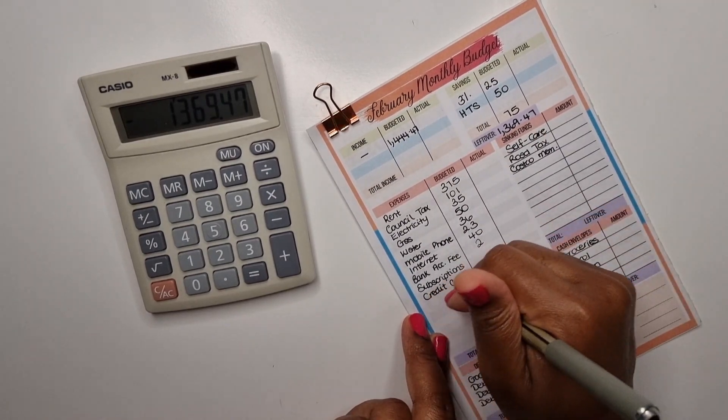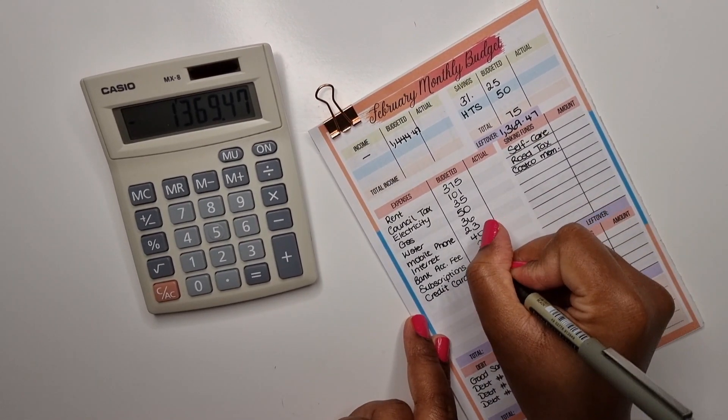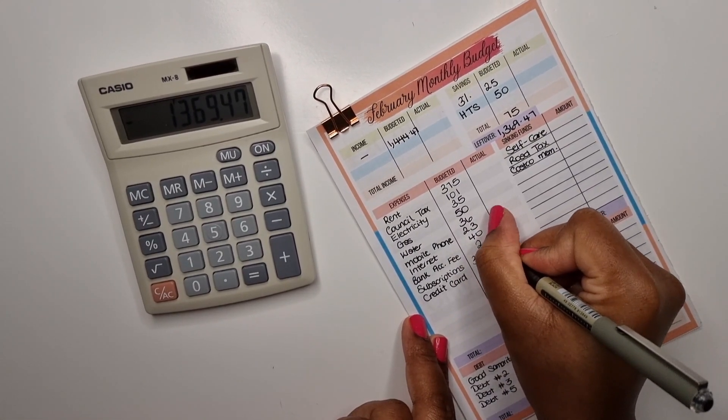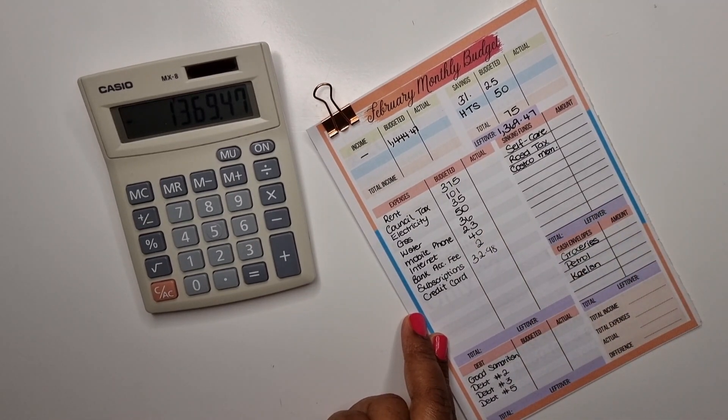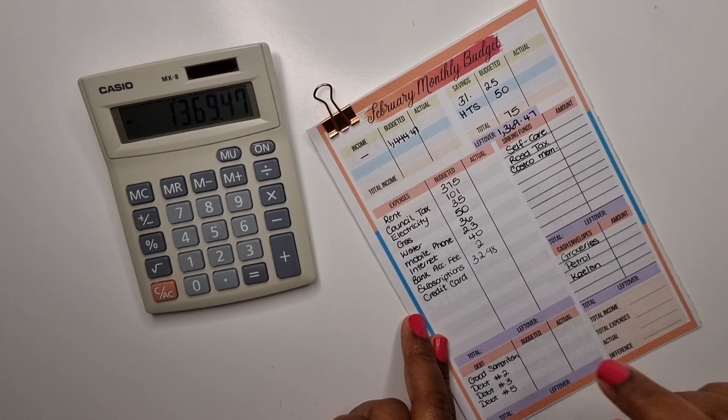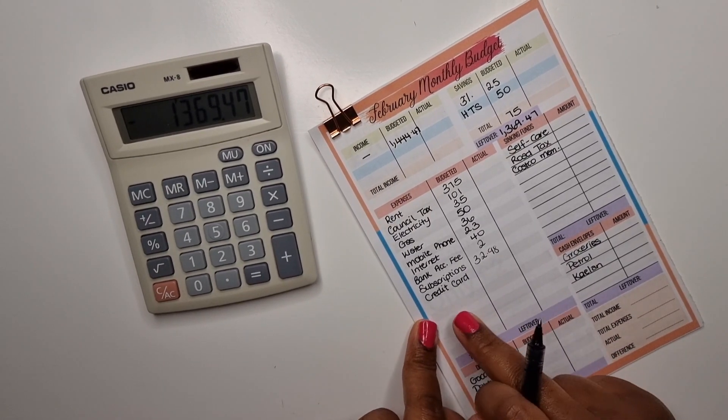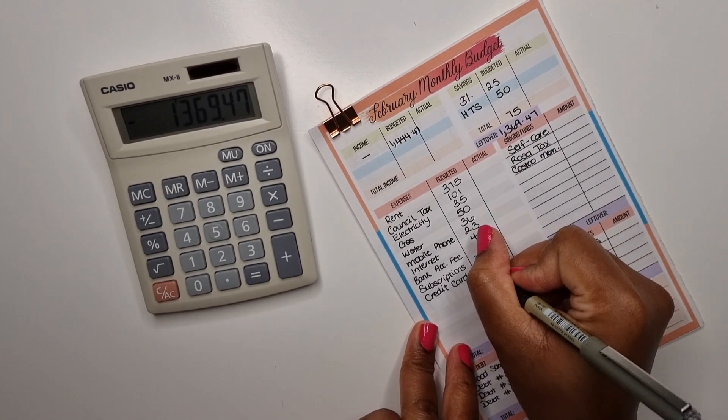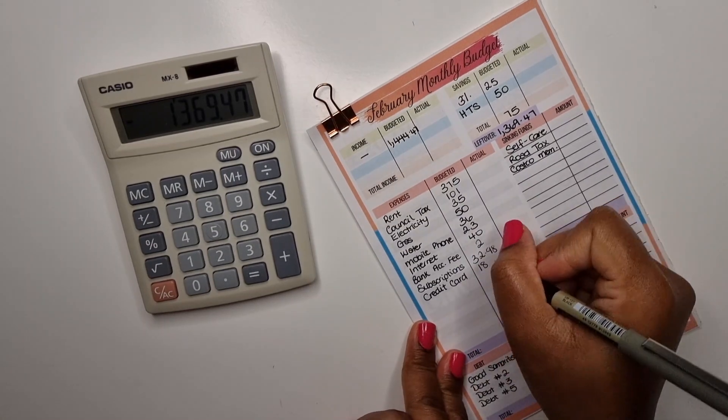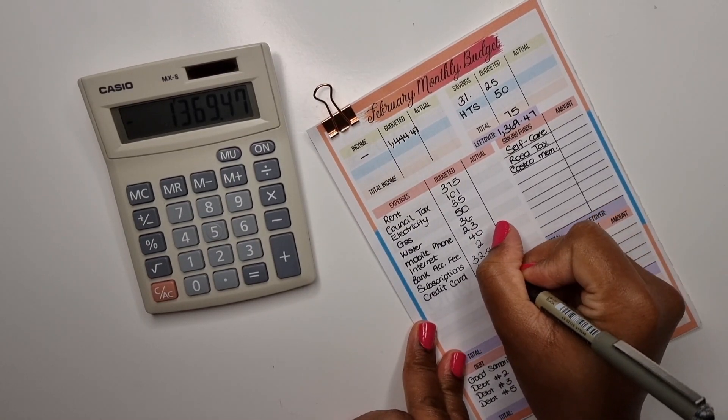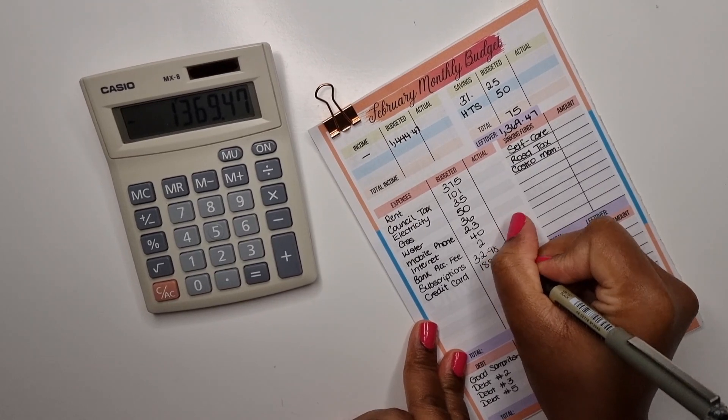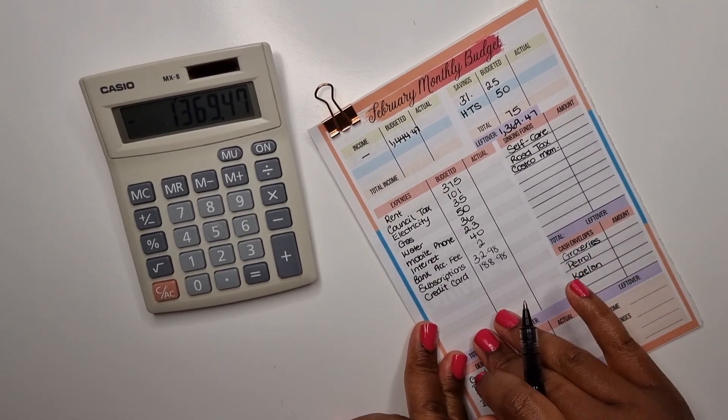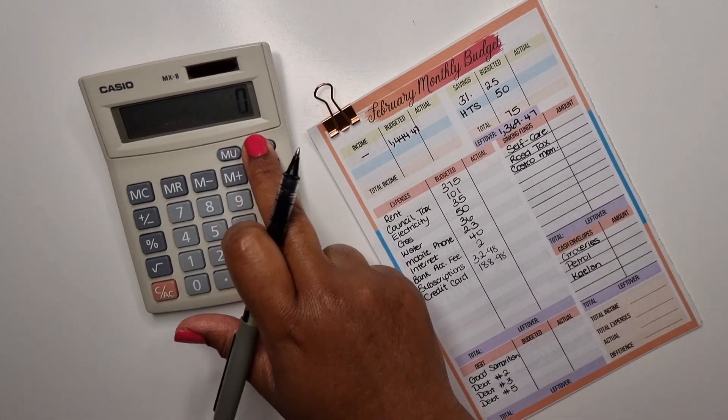Mobile phone is twenty-three pounds, internet forty, bank account fee two pounds, subscriptions thirty-two ninety-eight. And then you'll see credit card here, and basically this is the amount I paid on my credit card to clear it off to make sure there's not a balance on it. So that's one hundred and eighty-eight ninety-eight. And this was used in January, but the amount is coming out of February's money because that's just how it's going to work on my budget.